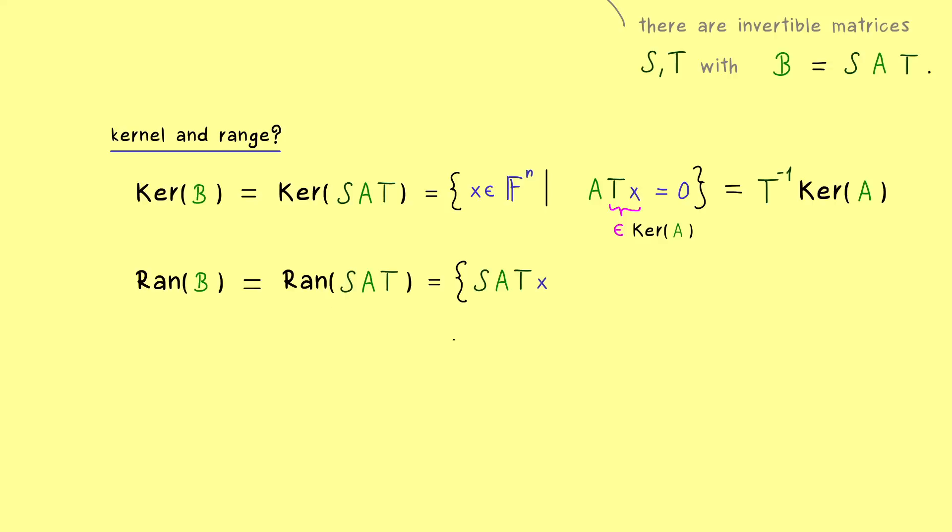It's simply the full image, so we take a vector x and go through all possibilities. And there we see the same as before, we can use the invertibility of the matrix T. In short, if x goes through all vectors in F^n, then Tx goes also through all vectors in F^n. This means instead of Tx we can write x tilde and then we have a shorter description of the same set.